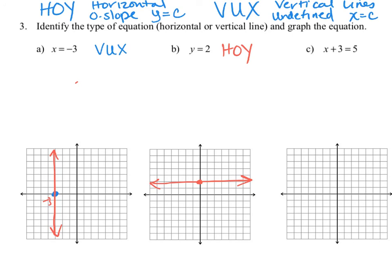In part C, we have x plus 3 equals 5. By simplifying, subtracting 3 from both sides, we get x is equal to 2. We can see right away that this is VUX — it's going to be a vertical line with undefined slope. The equation only has an x in it. So x equals 2 denotes the x-intercept, and we draw a vertical line, assuming each grid box represents one unit.